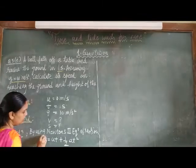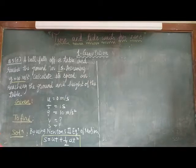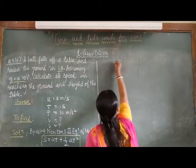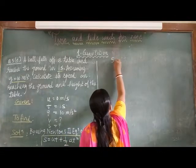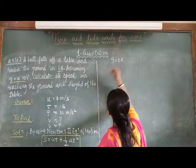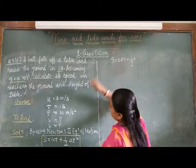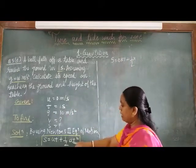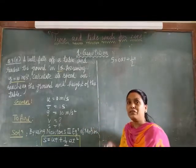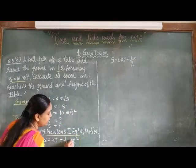We have to substitute in this formula. Now, s we don't know, initial velocity we know, time we know. So, we will substitute here, s is equals to 0 into time is 1 second plus half, g is given. Here, g and a, when the object is falling down under the force of gravity, we can also write a as g, t square.